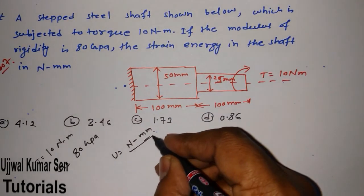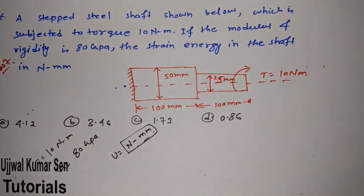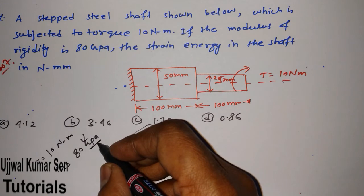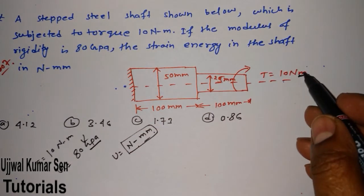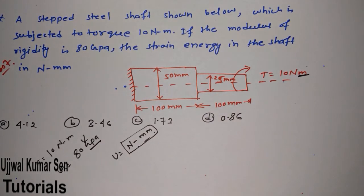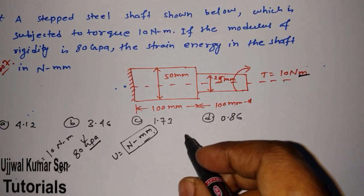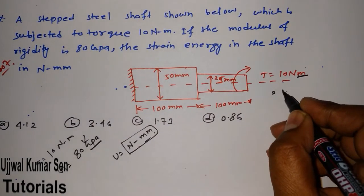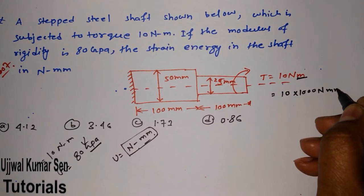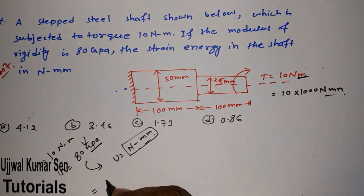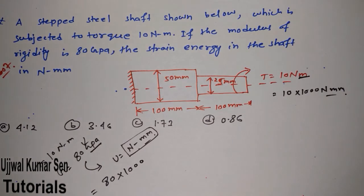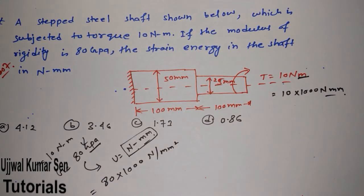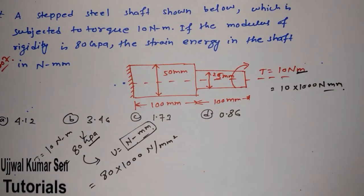Since the answer is required in Newton-mm, we need to convert the given SI values. Torque becomes 10 × 1000 = 10,000 Newton-mm. For the modulus of rigidity, 80 gigapascal — since megapascal means Newton per mm squared — after conversion it becomes Newton per mm squared, so all units are now set consistently in mm.